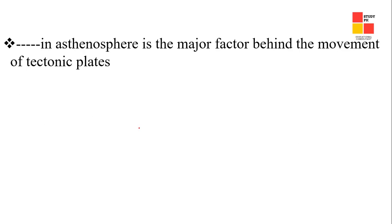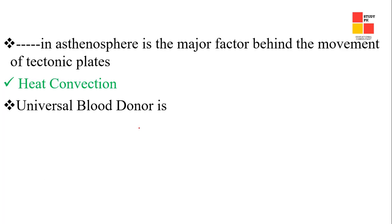The major factor behind the movement of tectonic plates — the right answer is heat convection. Heat convection is the major factor. Next one: universal blood donor — the right answer is blood group O.